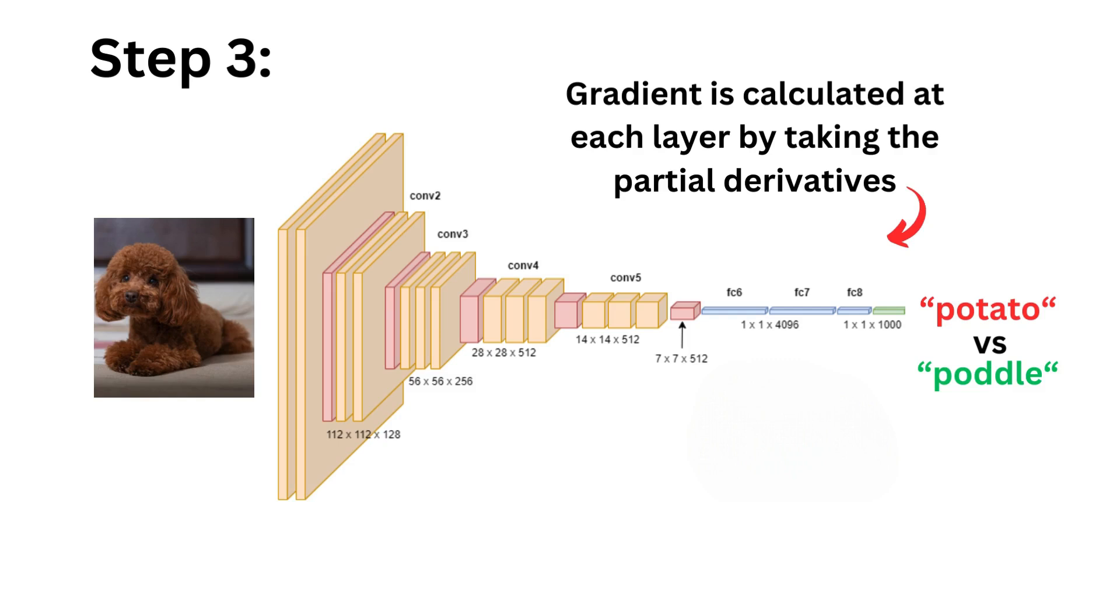Once the error is found, it is backpropagated across the layers. Then the gradient at each layer will be calculated by finding the partial derivative of the parameters with respect to the target cost function.